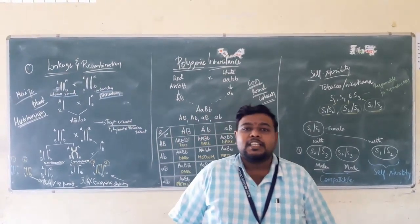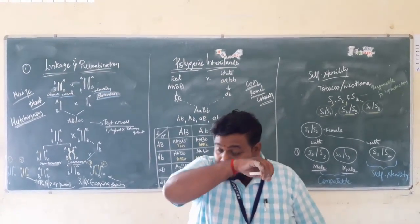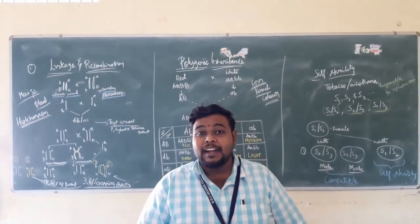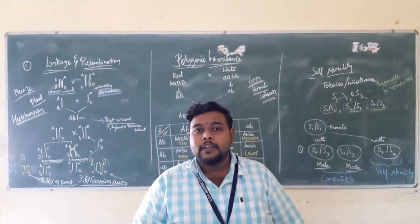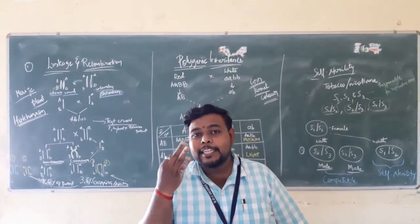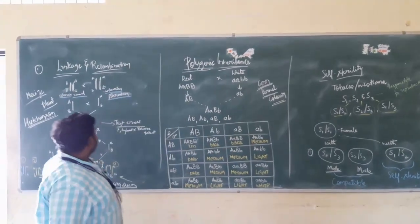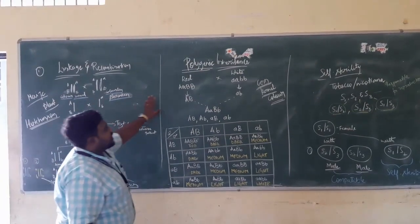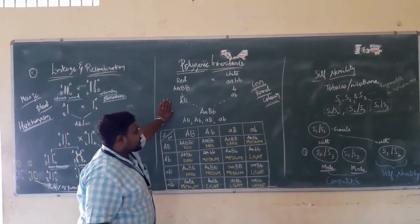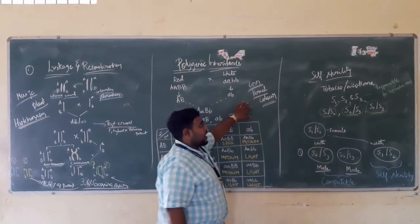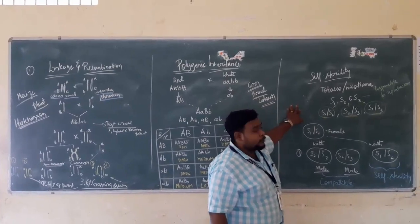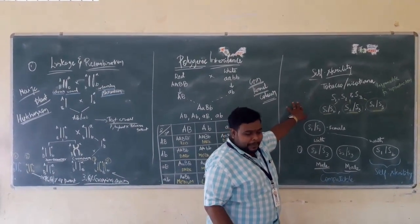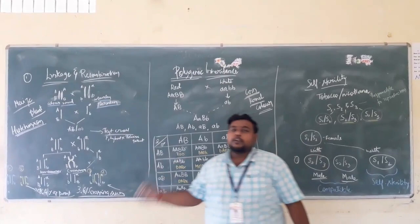Good morning students. In this class, we will be learning about the continual part of the material differences. In this particular video, we will be learning three topics: namely, leakage and recombination in case of maize plant, polygenic inheritance in case of corn kernel, and self-sterility in case of tobacco or Nicotiana plant. Let me explain in detail each of the topics.